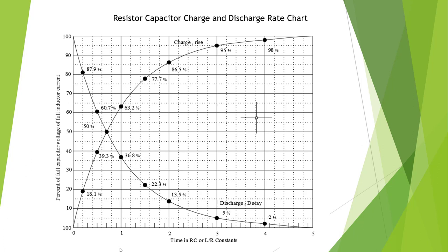The charge increases by 63.2% each time constant. So the first time constant we're going to go from 0 to 63.2% charged. And every time constant after that we're going to go up by another 63.2% of the remaining.